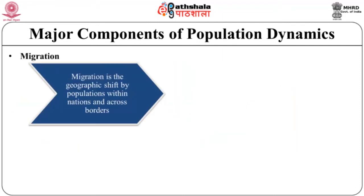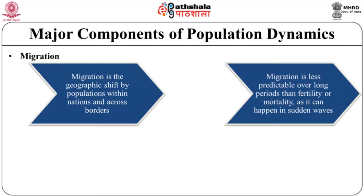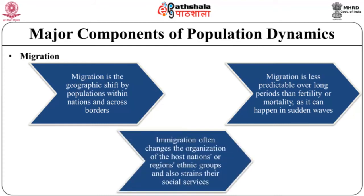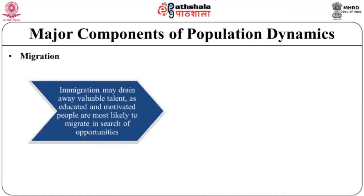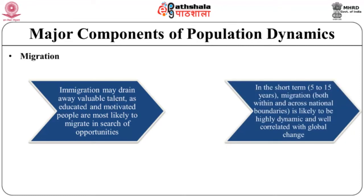Migration is the geographic shift by populations within nations and across borders. Migration is less predictable over long periods than fertility or mortality. For example, refugees may flee a war or move slowly over many years. Immigration often changes the ethnic organization of host nations and strains social services, but on the positive side it can provide needed labor, both skilled and unskilled. For source countries, however, immigration may drain away valuable human capital, as educated and motivated people are the most likely to migrate in search of opportunities. In the short term — 5 to 15 years — migration is likely to be highly dynamic and correlated with global change.